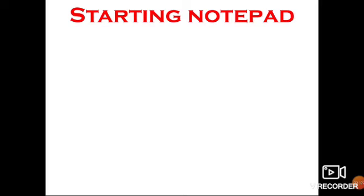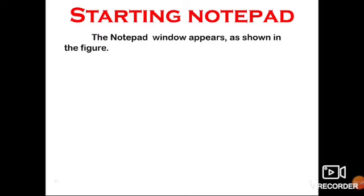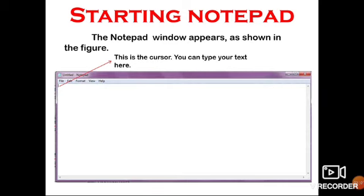The Notepad screen is shown here. Here we find the cursor. See children, here a small line you can see, this is called as the cursor where we can start typing. It will show where is the mouse cursor where you have to write. So you have to just go on typing the words or the text using your keyboard. You have already studied keyboard in your last lesson. So with the help of keyboard you have to type the text.